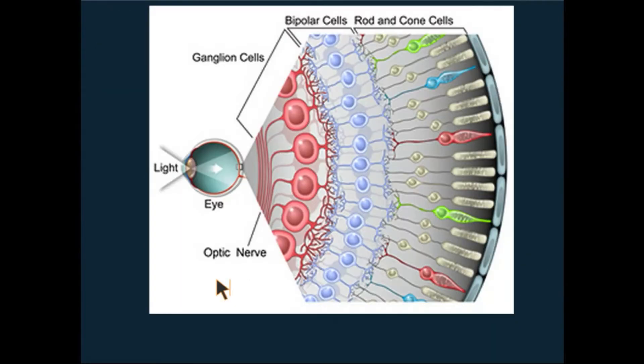So light images turn into electrochemical signals. In order for this to happen, the light has to hit the photoreceptor cell layer at the back of the retina. The rods and cones, when stimulated by light, perform three main functions.